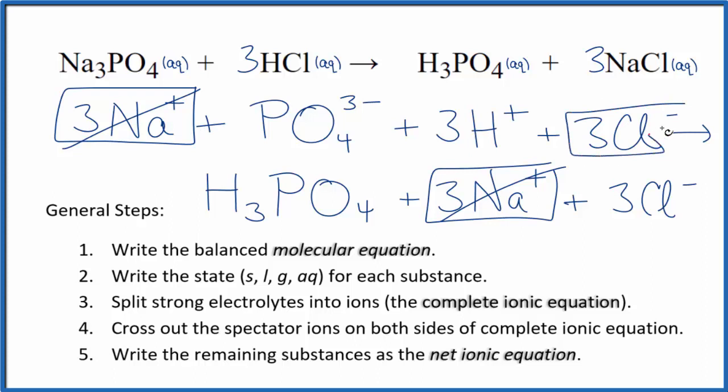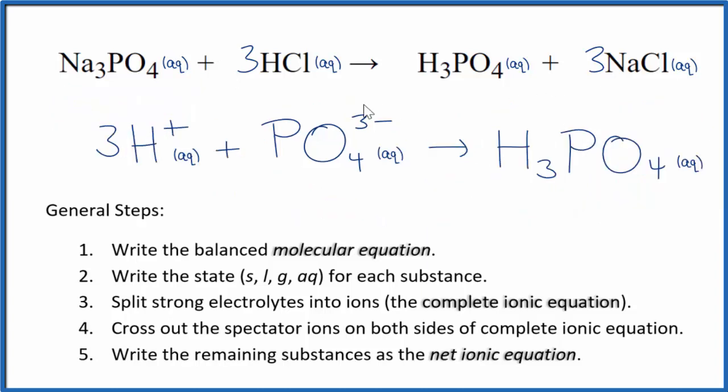Three chloride ions in the reactants and in the products, those are spectator ions. What's left is the net ionic equation for Na3PO4 plus HCl. I'll clean this up, write the states, and we'll have our net ionic equation. So this is the balanced net ionic equation for sodium phosphate and hydrochloric acid.